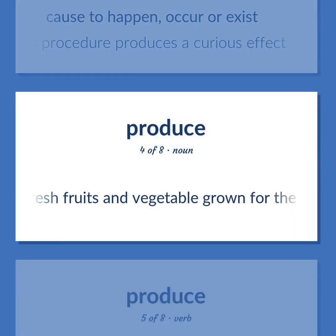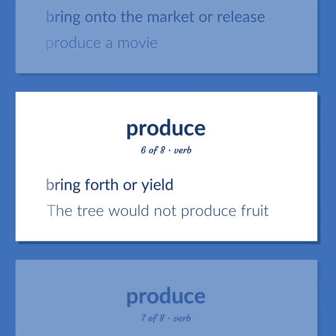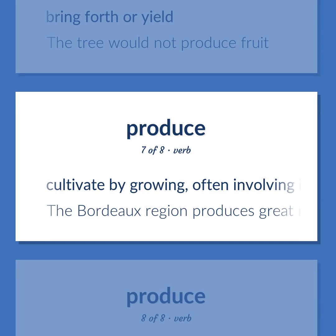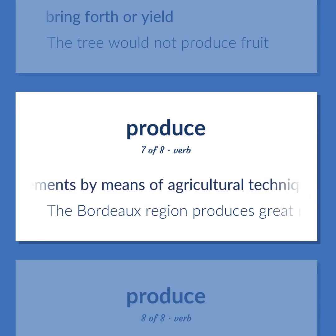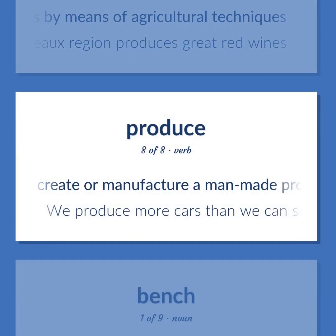Fresh fruits and vegetables grown for the market. Bring on to the market or release; produce a movie. Bring forth or yield; the tree would not produce fruit. Cultivate by growing, often involving improvements by means of agricultural techniques; the Bordeaux region produces great red wines. Create or manufacture a man-made product; we produce more cars than we can sell.